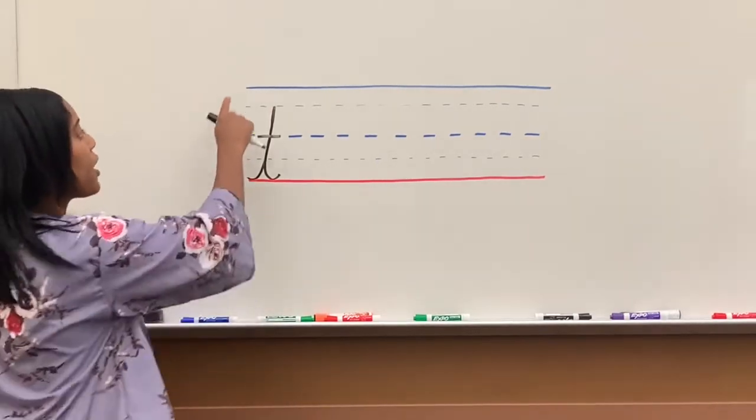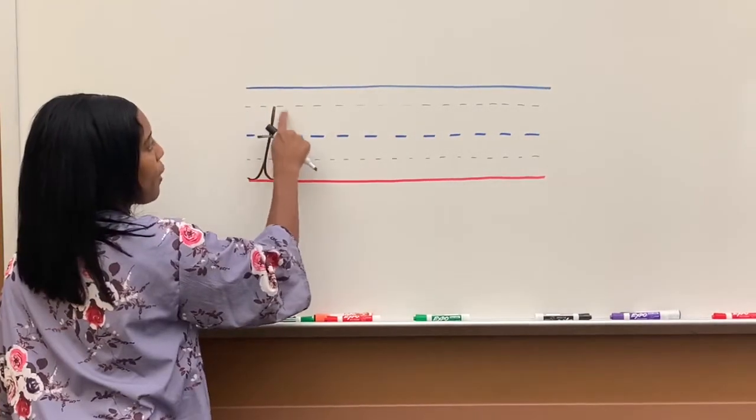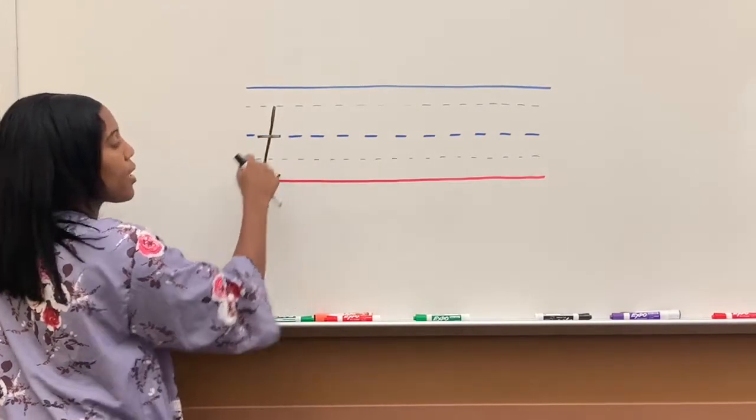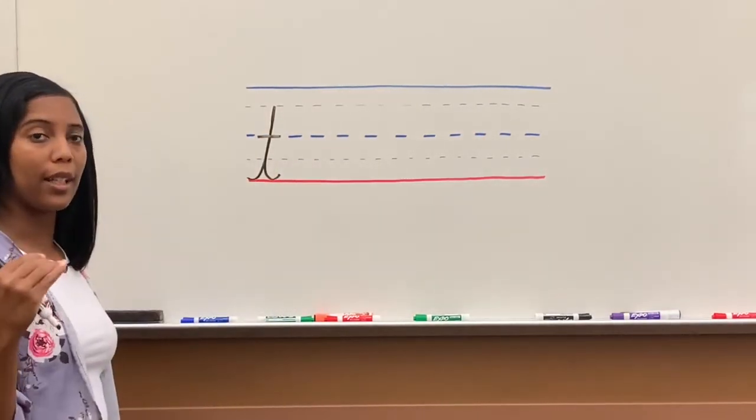T does not fill the entire line. As you can see, it's stacked at this dotted line here, but it still does go above the middle dotted line.